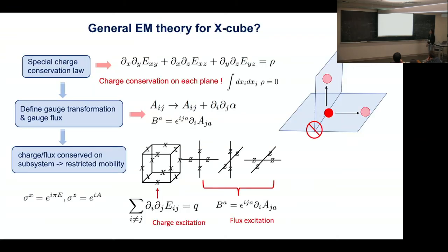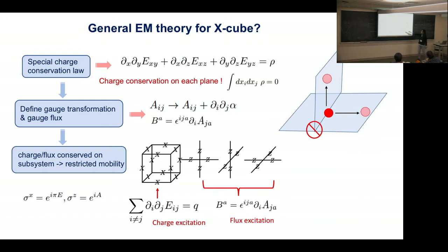Since Andrew Bremner already mentioned generalized electromagnetism descriptions for fracton stabilizer codes, we'll go through this quickly. In three spatial dimensions, we define three types of electric operators: E_{xy}, E_{xz}, and E_{yz}, forming a symmetric tensor with only off-diagonal components. We write a special Gauss law: ∂_i ∂_j E_{ij} equals the local charge density. This differs from the usual Gauss law, which has only one partial derivative. Because we have two partial derivative operators in front of each electric operator, the charge is not just conserved globally.